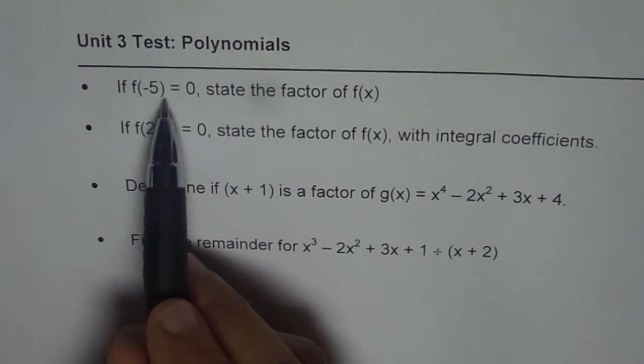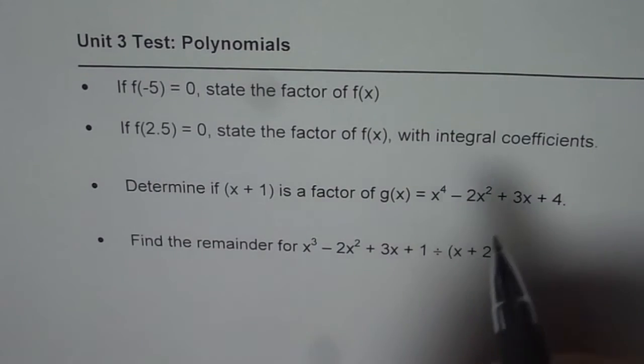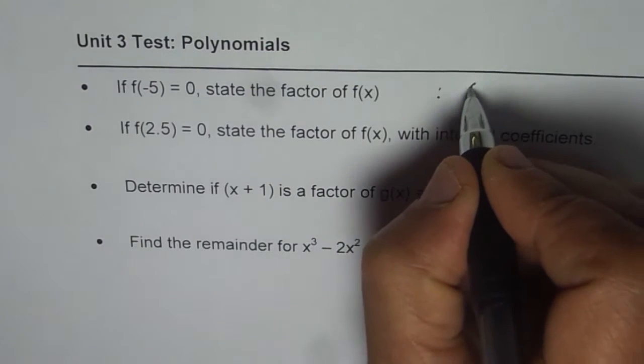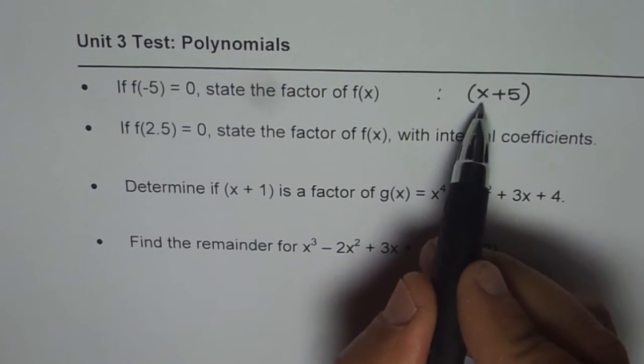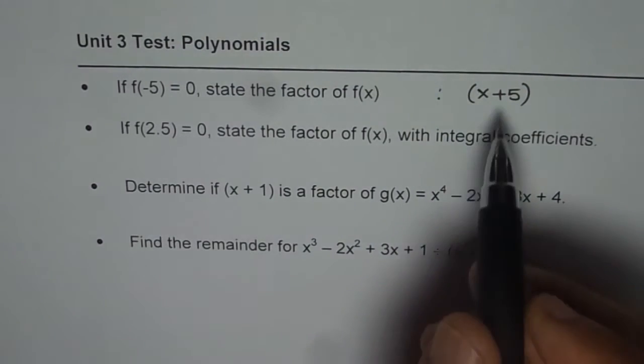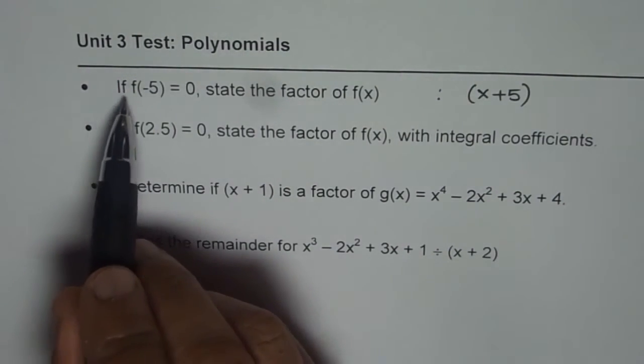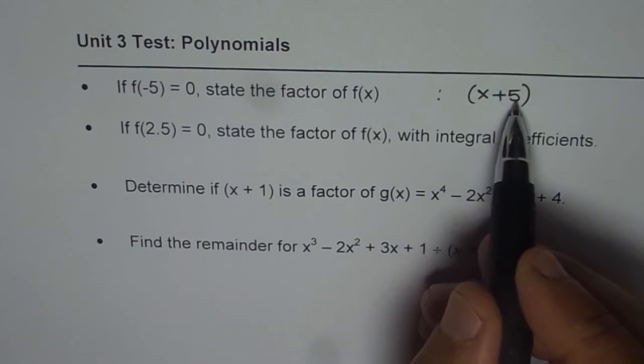If f of minus 5 is equal to 0, that means minus 5 is a root. So that means the factor should be (x + 5), correct? Now if I put x equals minus 5, then anything multiplied by 0 will be 0. So then you get the value as 0. So if f of minus 5 equals 0, then the factor is (x + 5).